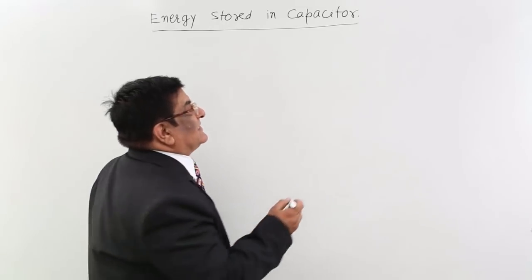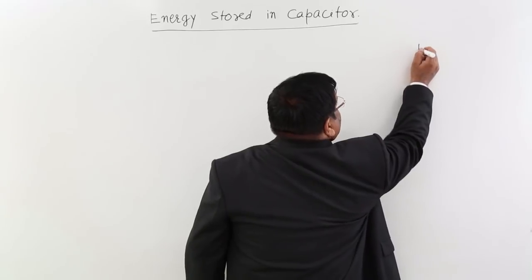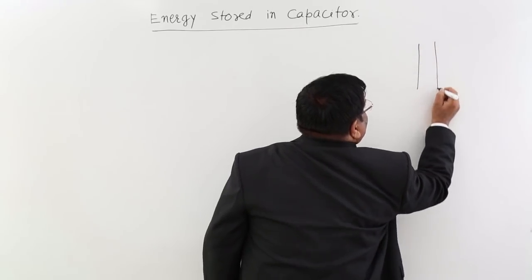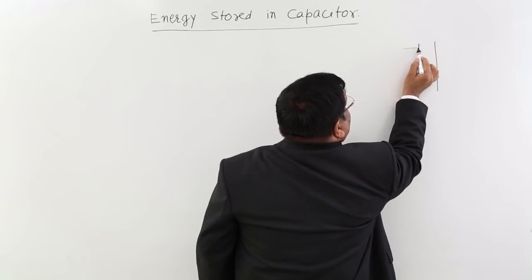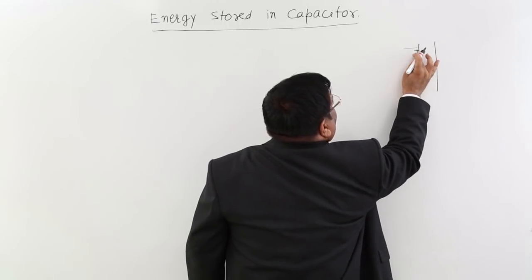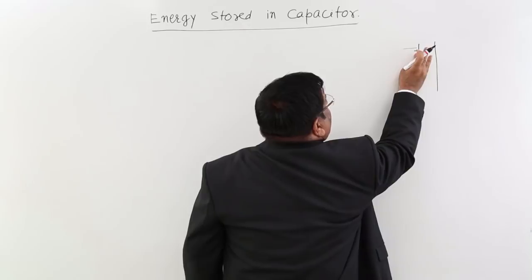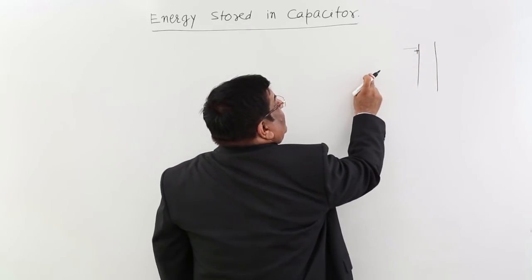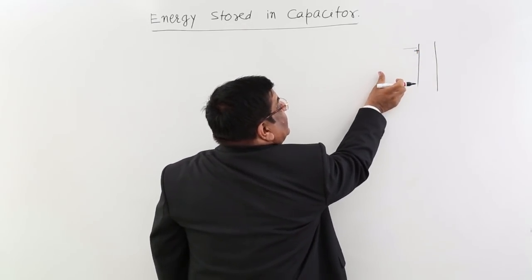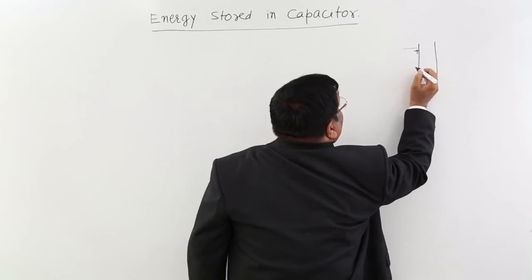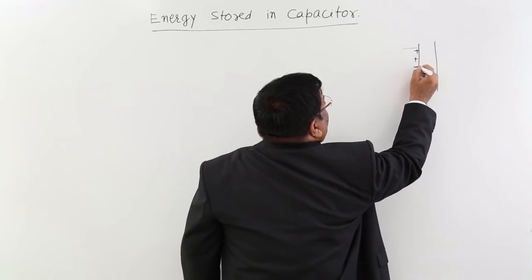The process is: this is a plate of capacitor. I give it charge plus. When I want to give it the next positive charge, this plus will repel, so I have to apply a force, do the displacement and do the work.